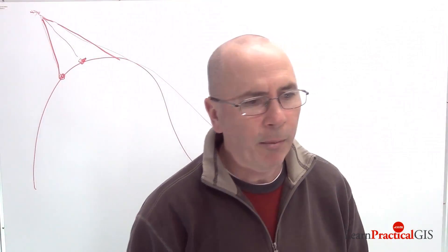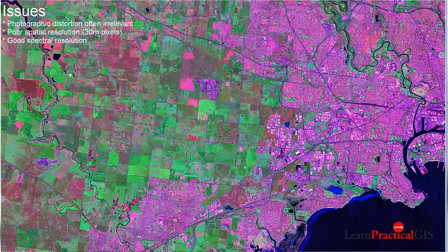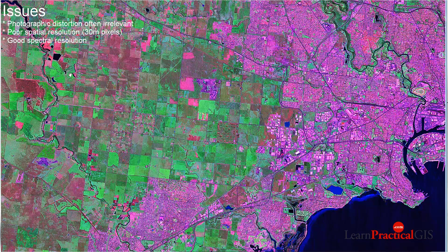Another way to pull data in is through satellite imagery. I love satellite imagery — for regional scale projects it's just fantastic. The issue of photographic distortion from air photos doesn't exist so much, because instead of the image being taken at say 3,000 to 15,000 feet, it's taken from 170 kilometres above the Earth. So a lot of those distortion issues don't exist, particularly for non-mountainous terrain.